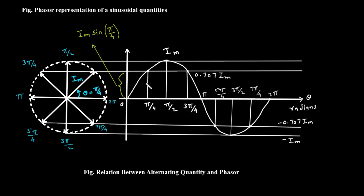Now, let the phasor rotate counterclockwise to an angle of pi over 4, which is 45 degrees. At this position, the vertical height of the phasor's tip is given by trigonometry — it's the length of the phasor, I sub m, times the sine of the angle, pi over 4. The sine of pi over 4 is about 0.707, so the height is 0.707 times I sub m. Now look at the sine wave graph: at the point pi over 4 on the horizontal axis, the value of the wave is exactly 0.707 times I sub m. When the phasor rotates to pi over 2, or 90 degrees, it's pointing straight up. Its vertical height is at its maximum, equal to its full length, I sub m. On the sine wave graph, at pi over 2, the wave reaches its positive peak, with a value of I sub m.